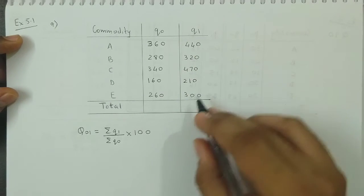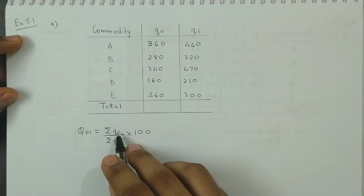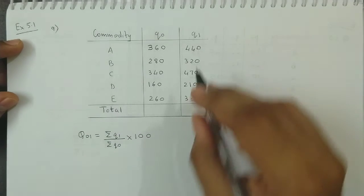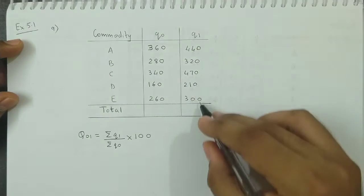The formula as we know is summation Q1 upon summation Q0 into 100. So basically we need to calculate these two columns, Q0 and Q1.